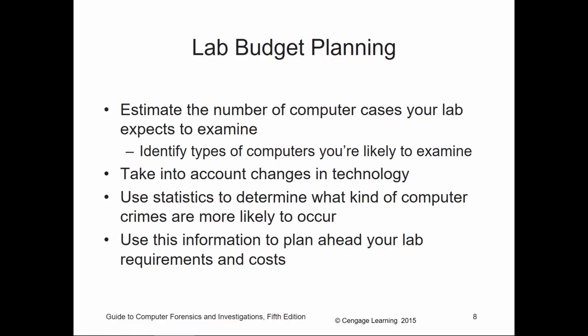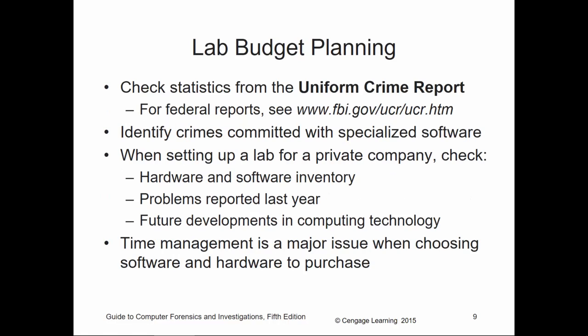We can check statistics from the Uniform Crime Report, or for federal reports, the FBI's UCR crime reports. We can identify crimes committed within specialized software. When setting up a lab for a private company, we look at appropriate hardware, software, and equipment inventory, and look at past issues whether reported or not. We use those past reports to build future developments, and also look at future developments within computer technology — for example, if we see network-based crimes increasing in our area, we may start getting technology or training in those areas.